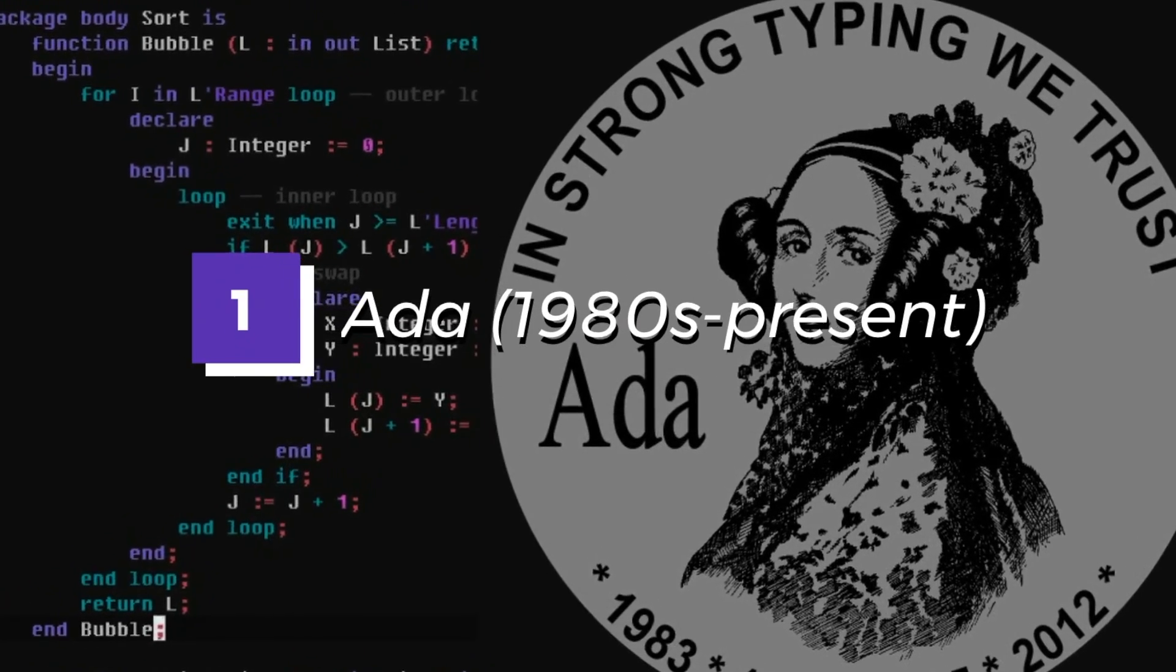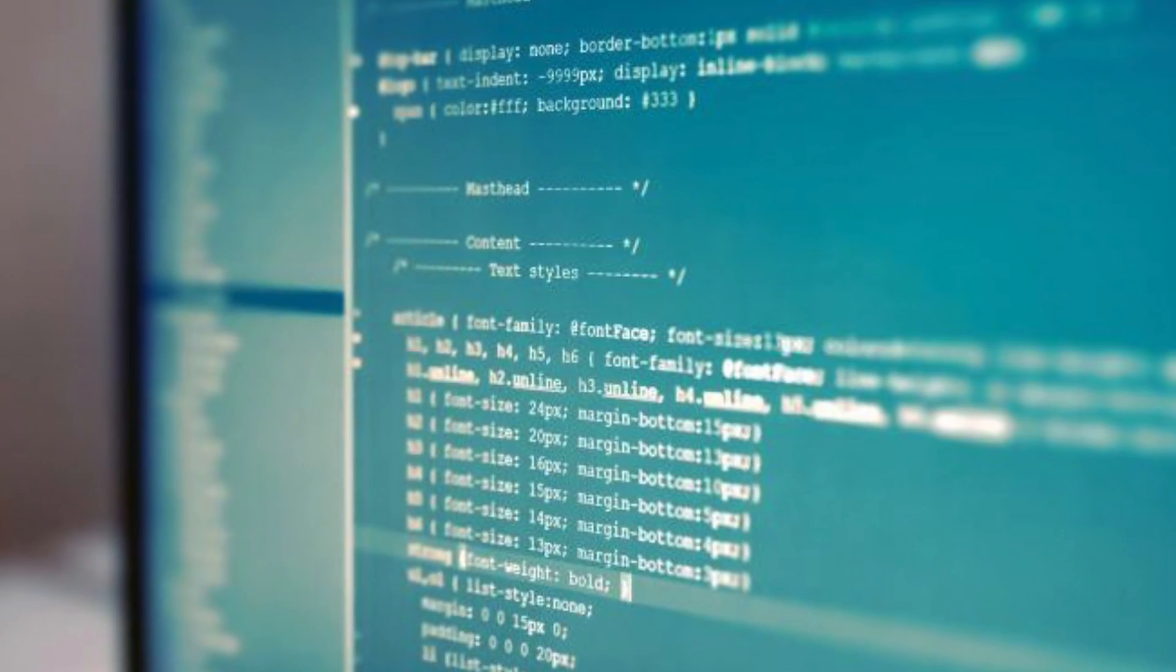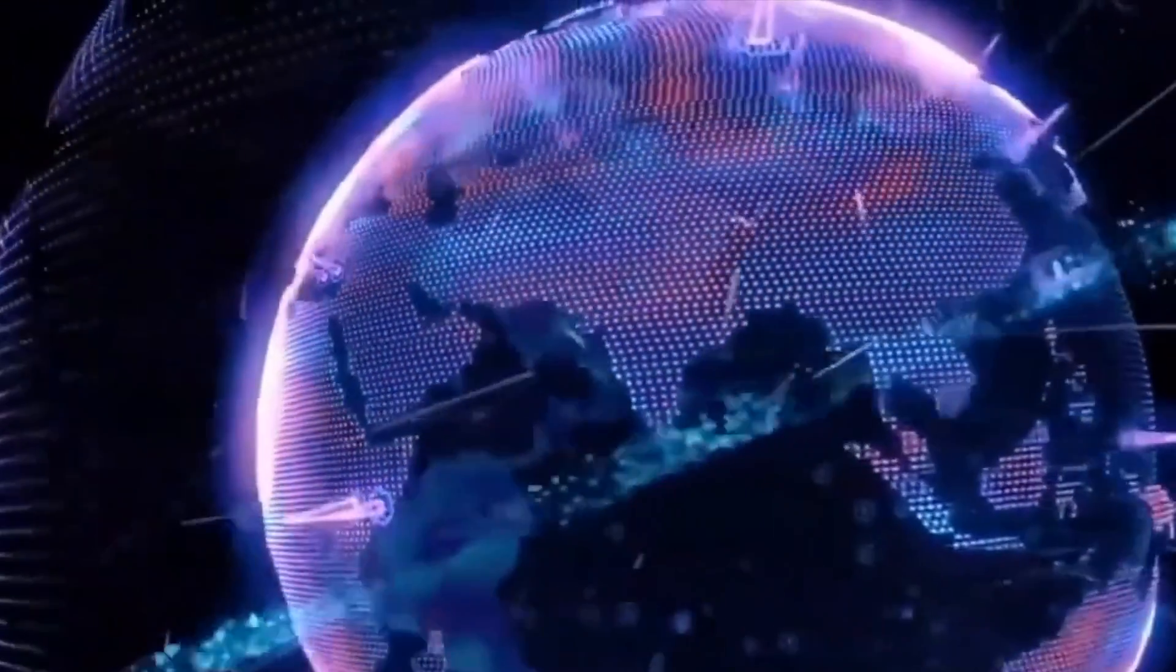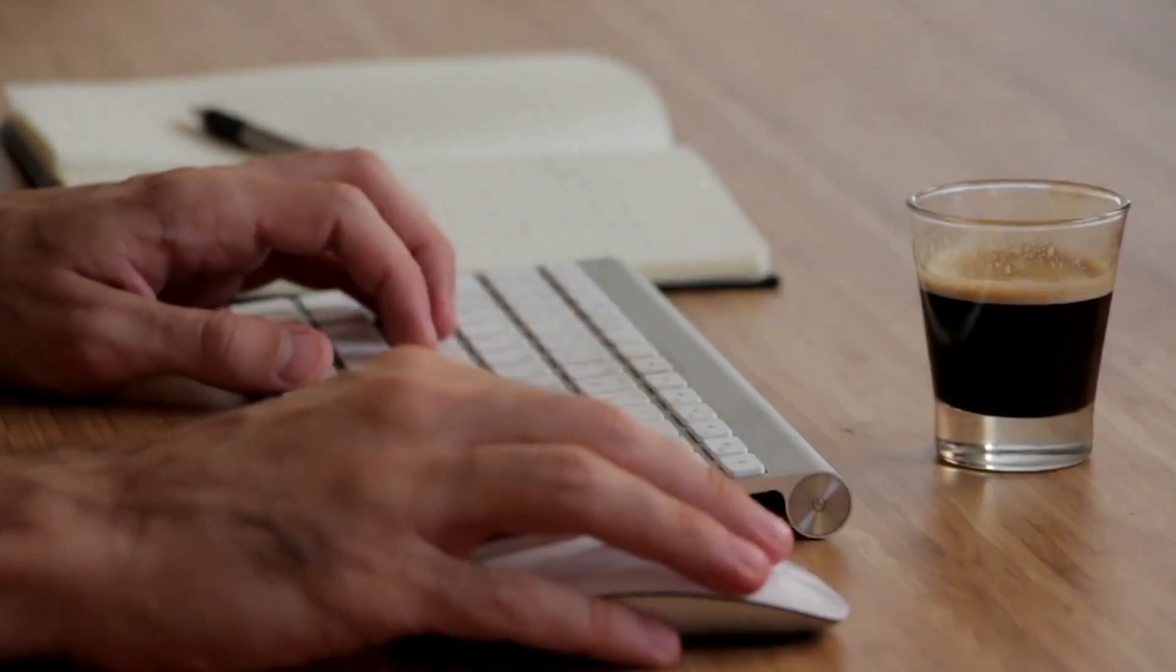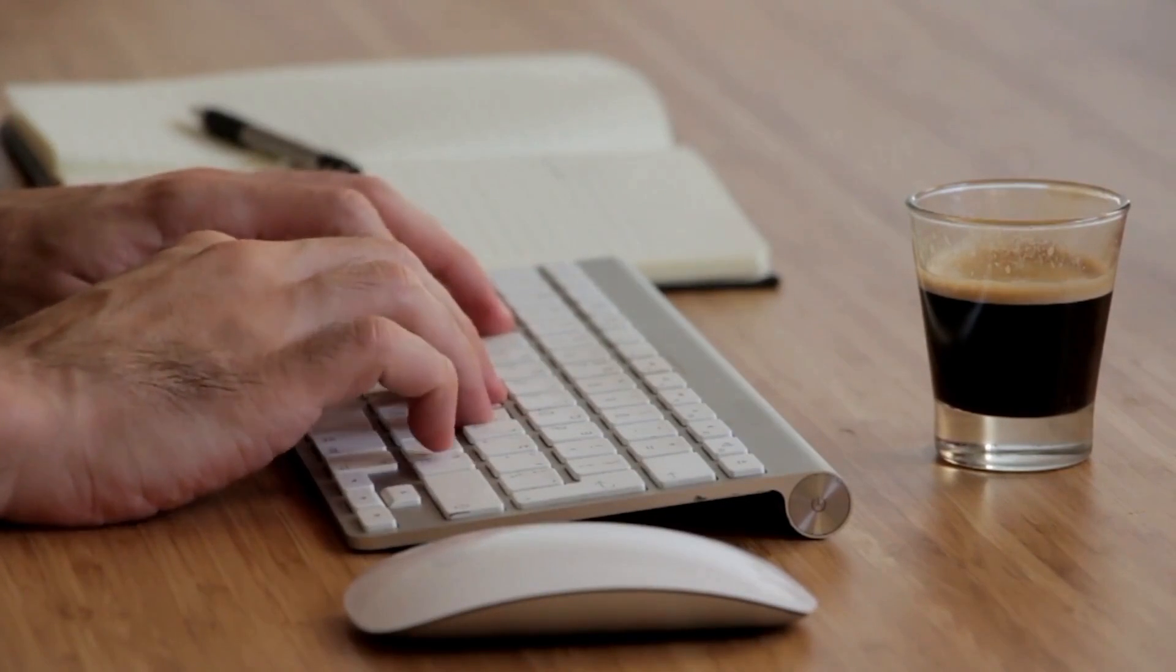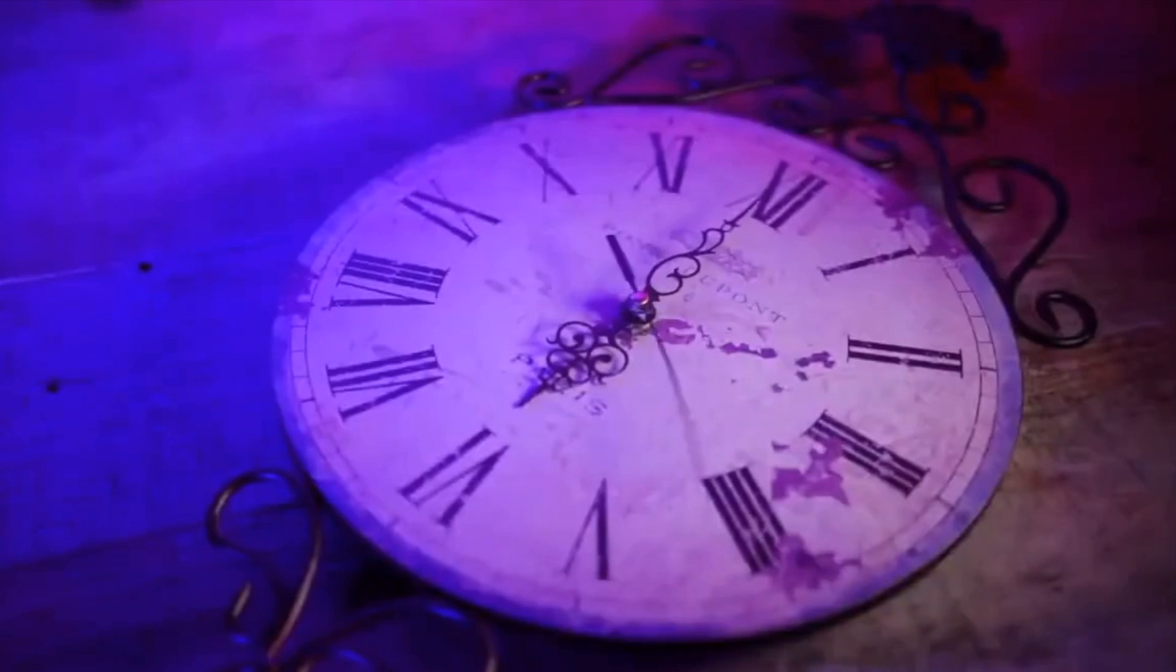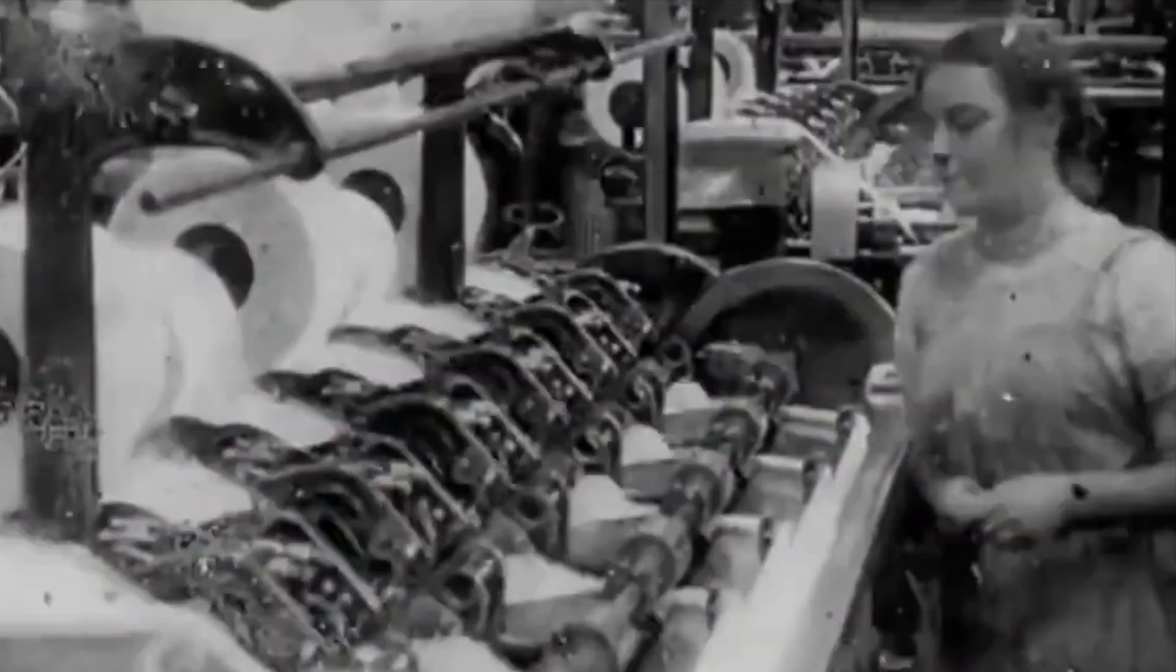Number 1. Ada. Ada is a high-level programming language that was designed specifically for use in safety-critical and real-time systems. It was created in the late 1970s by Jean Ichbiah, who was working for the French defense agency, Direction Générale de l'Armement. The language was named after Ada Lovelace, a mathematician who is credited with writing the first algorithm intended to be processed by a machine.